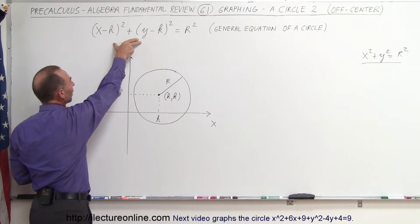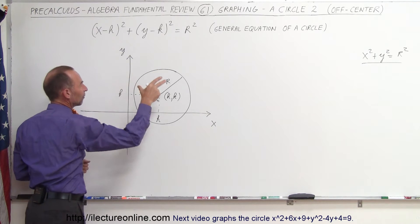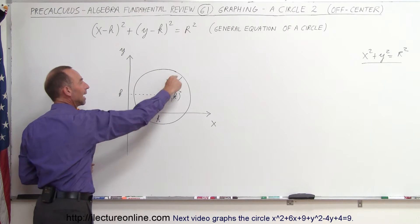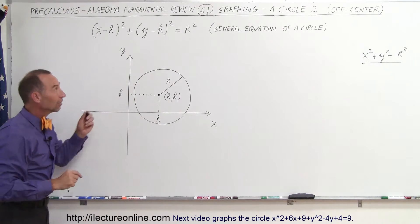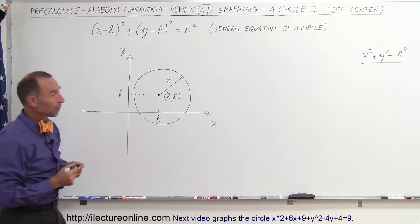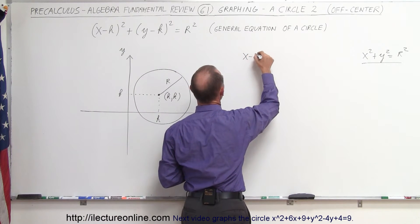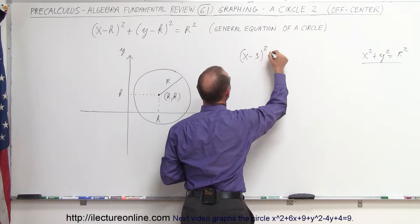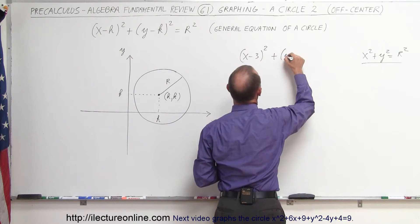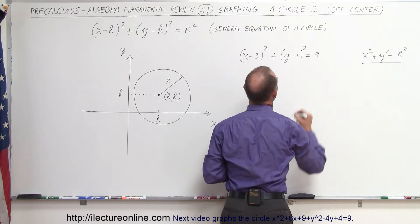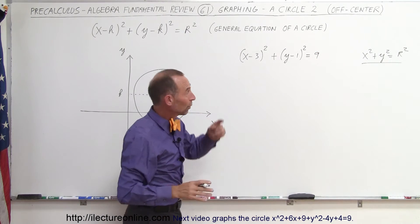And this equation now is representative of a circle with the center at location h, k and the radius equal to r. And it's in that format. For example, if we have an equation that looks like this, let's say we have (x - 3)² + (y - 1)² = 9. Of course, we then realize we can rewrite that.